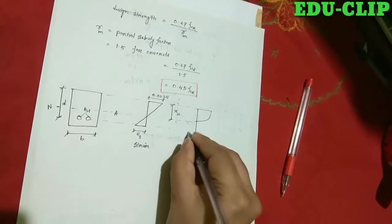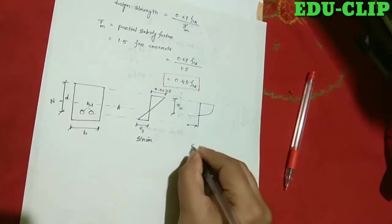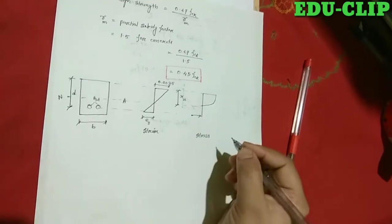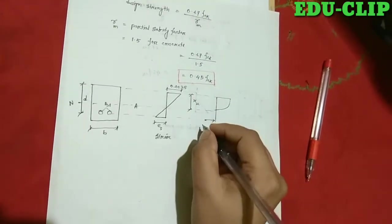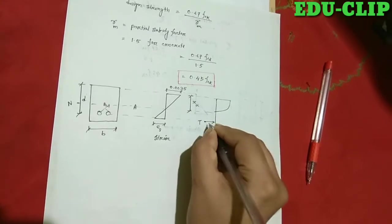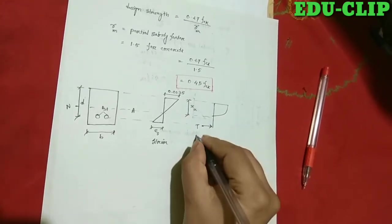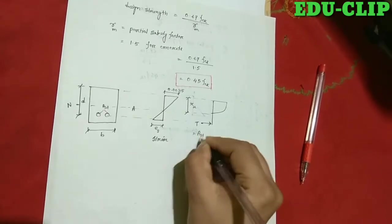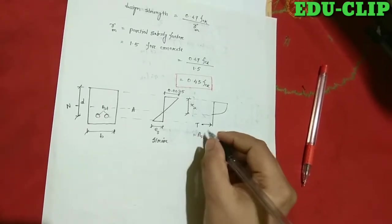This is the stress diagram of this rectangular RC section. Here T means tensile force, and tensile force is equal to AST — where AST means area of the tension reinforcement — multiplied by the yield strength of the steel.